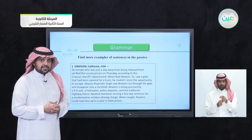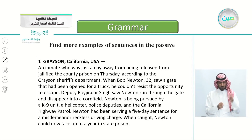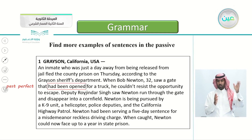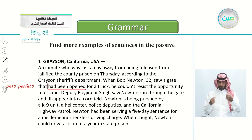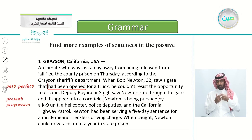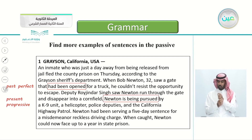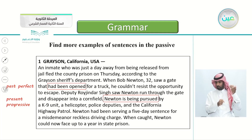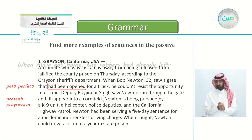Can you pinpoint any passive sentences? Yes — 'had been opened.' A gate that had been opened — this is past perfect passive. Another one: 'Newton is being pursued' — they added the doer 'by a canine unit.' 'Is being pursued' is present progressive passive. Notice the tenses: past perfect and present progressive.